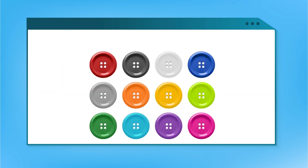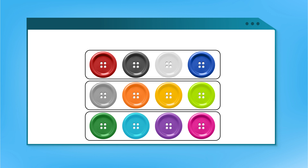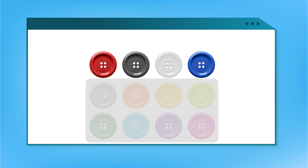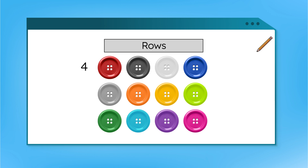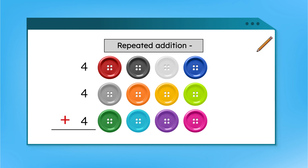Let's try counting the buttons in an array by rows to see if it's faster. How many buttons are in the first row? One, two, three, four. And if there are four in the first row, how many buttons are in the second and third rows? Four, because all the rows are equal. So we've got three rows of four. What can we do with all those fours to get the total? We can add them all together using repeated addition.